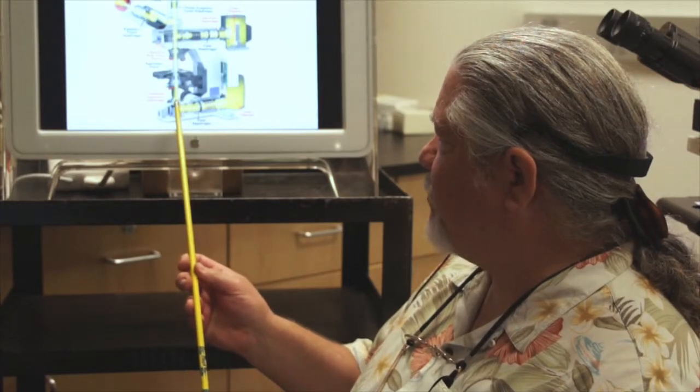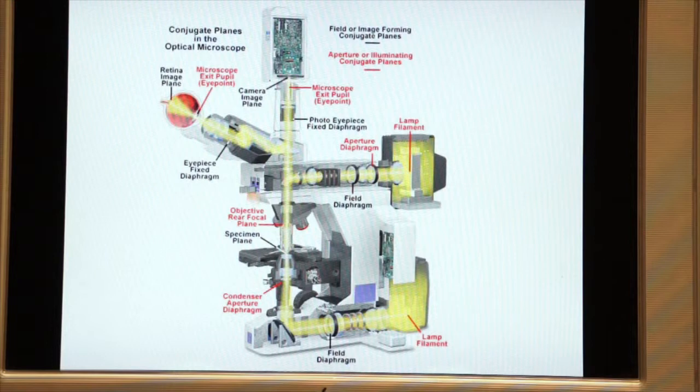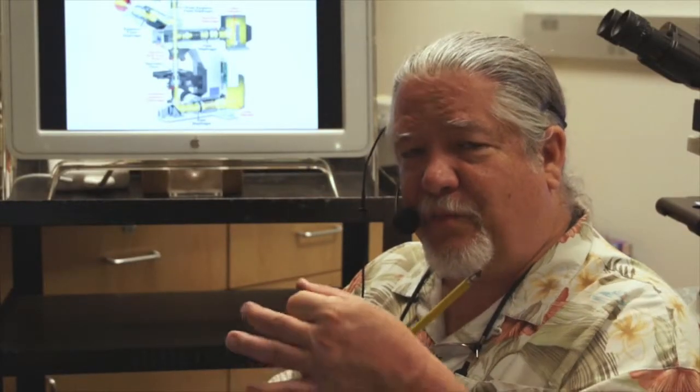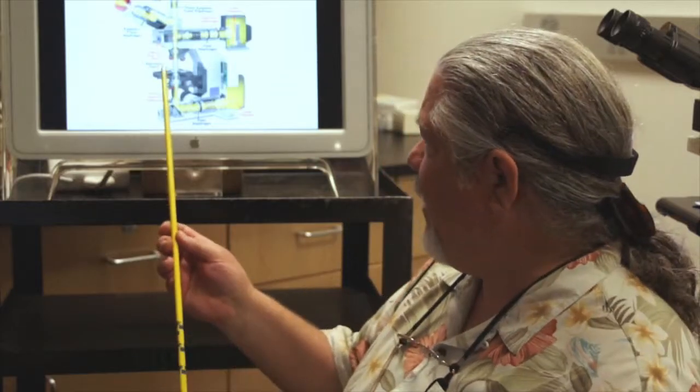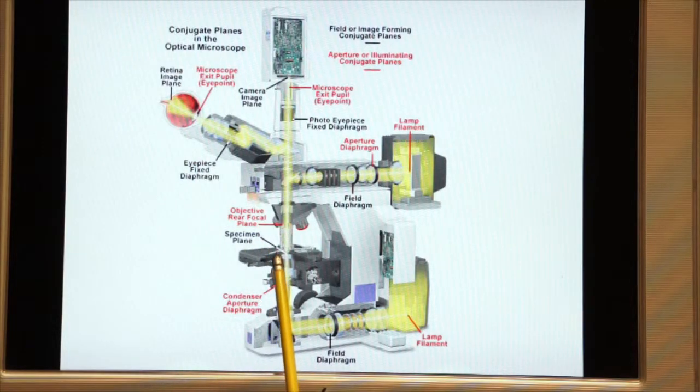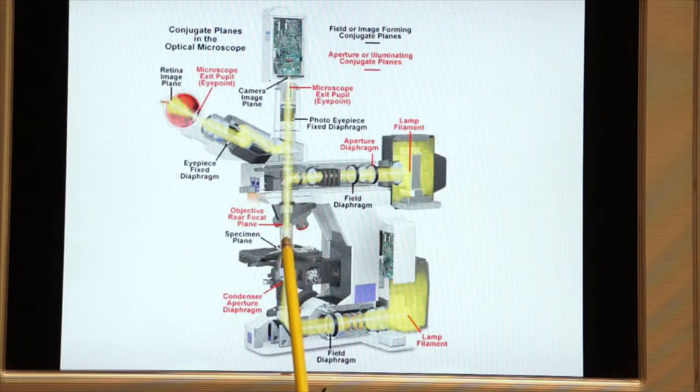It leaves the base of the microscope and now it travels into the condenser. Remember, the condenser is an optical device that condenses the light into a small cone of light so that it can travel through the specimen, which is here on your XY stage, and into the objective.